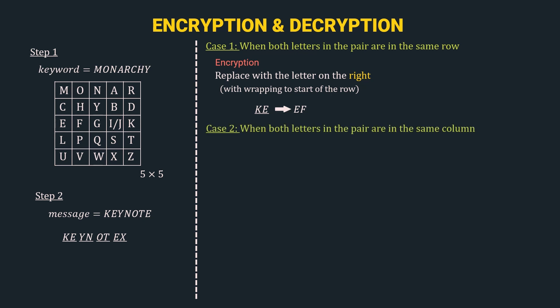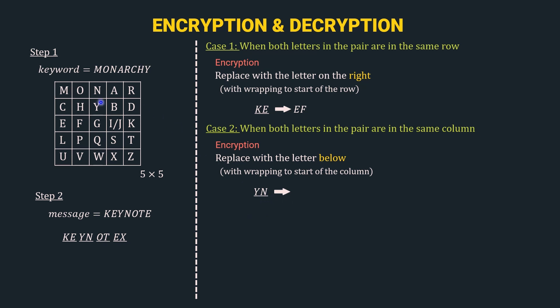Case 2: both letters in the pair are in the same column. For encryption, we replace each letter with the letter below it, wrapping to the start of the column if needed. Taking the second diagram YN — we locate Y and N in the matrix. Both are in the same column. Y is replaced by the letter below it — G — and N is replaced by the letter below it — Y. So YN encrypts to GY.